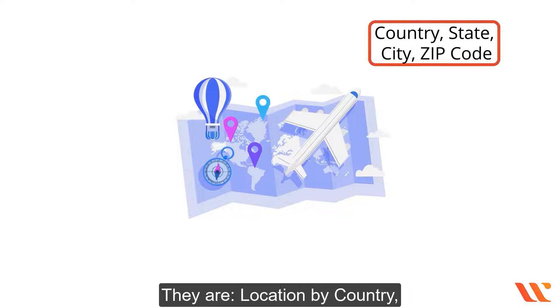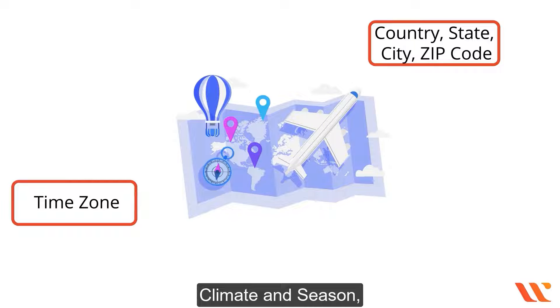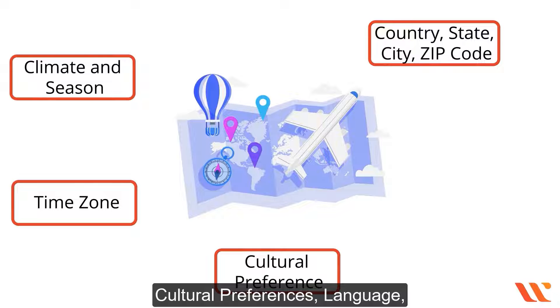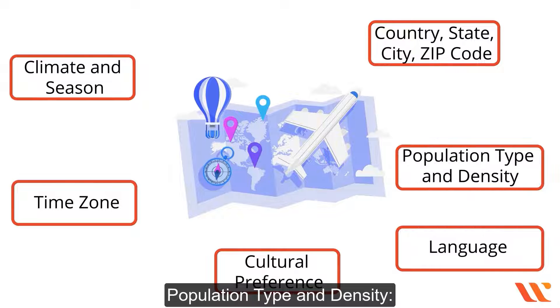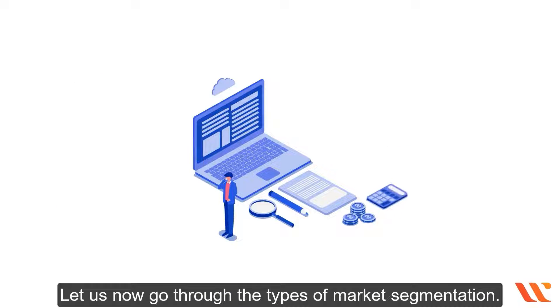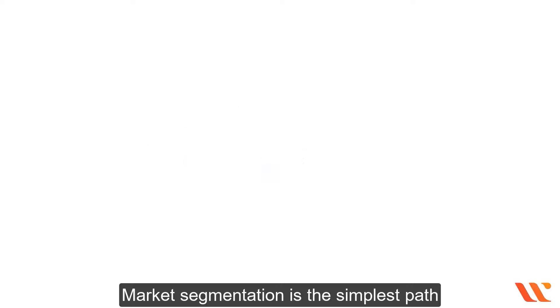They are: location by country, state, city, zip code; time zone; climate and season; cultural preferences; language; and population type and density — urban, suburban, exurban, or rural. Let us now go through the types of market segmentation.